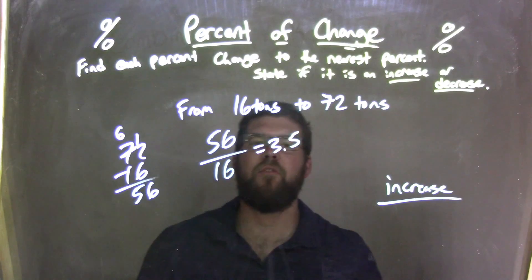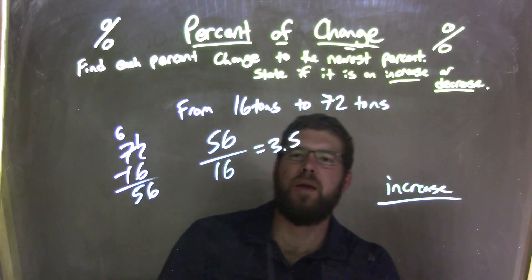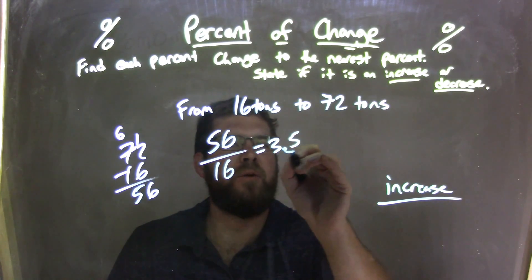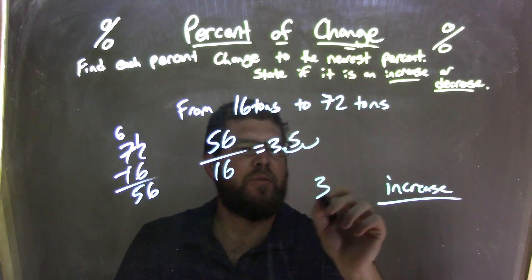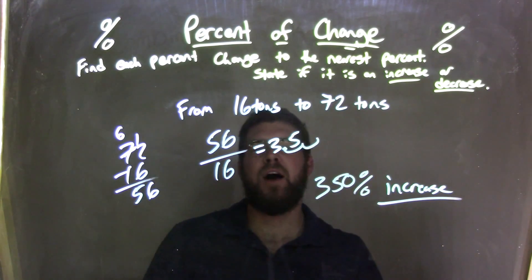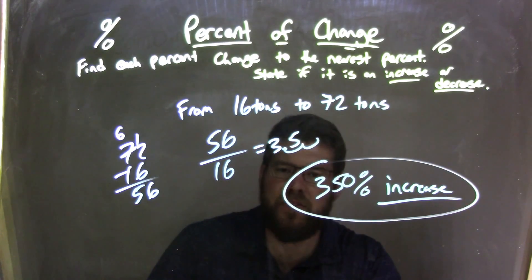So 3.5 was our increase here, but I need to convert that decimal into a percent. We move that two units to the right, one, two, boom, right there, and then the place value is zero. So we have 350 percent. 3.5 comes out to be 350 percent. So our final answer here is a 350 percent increase.